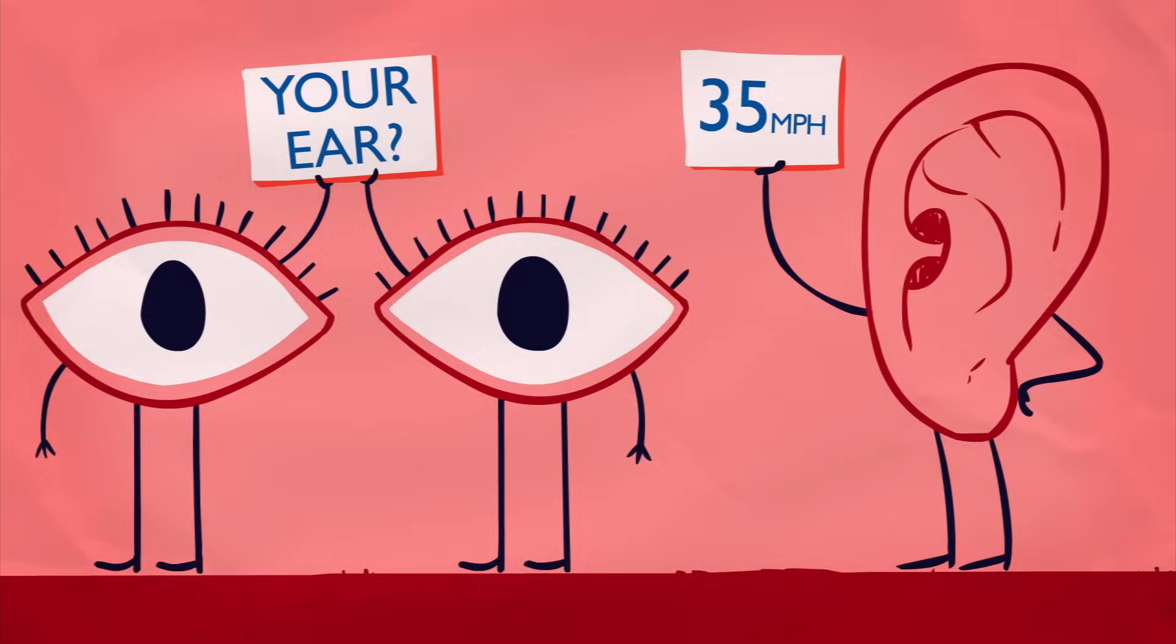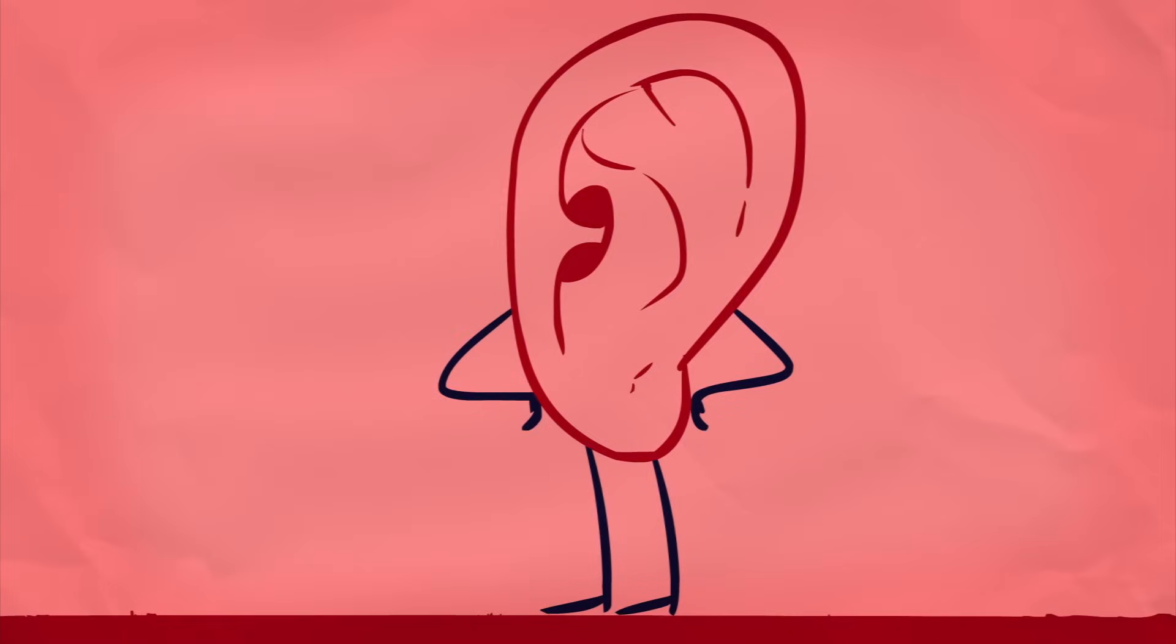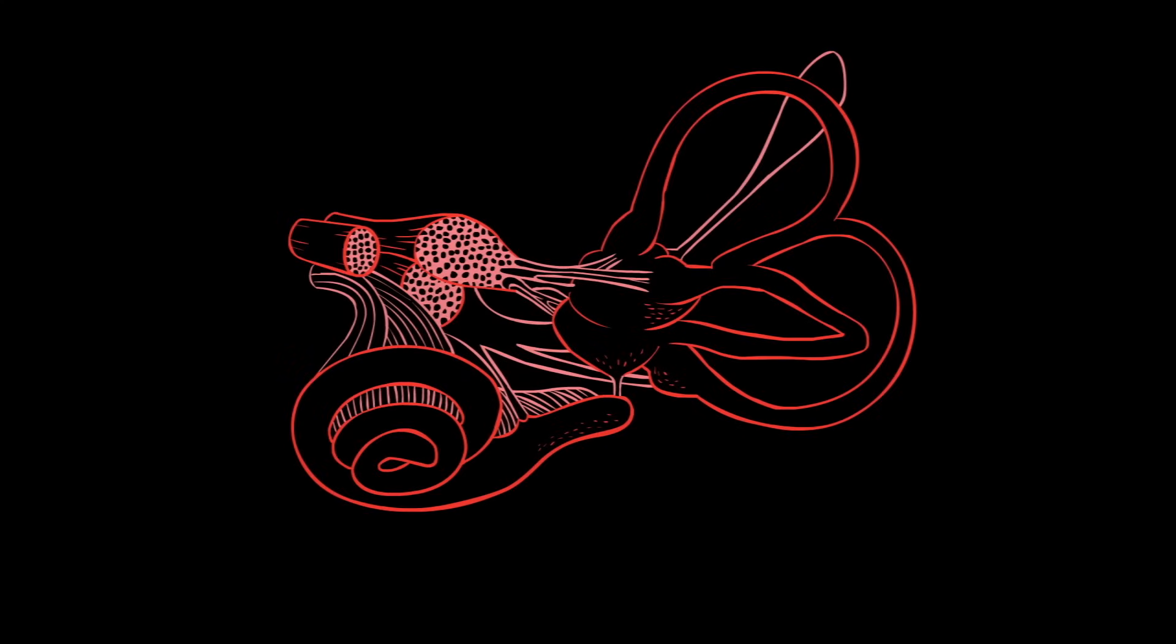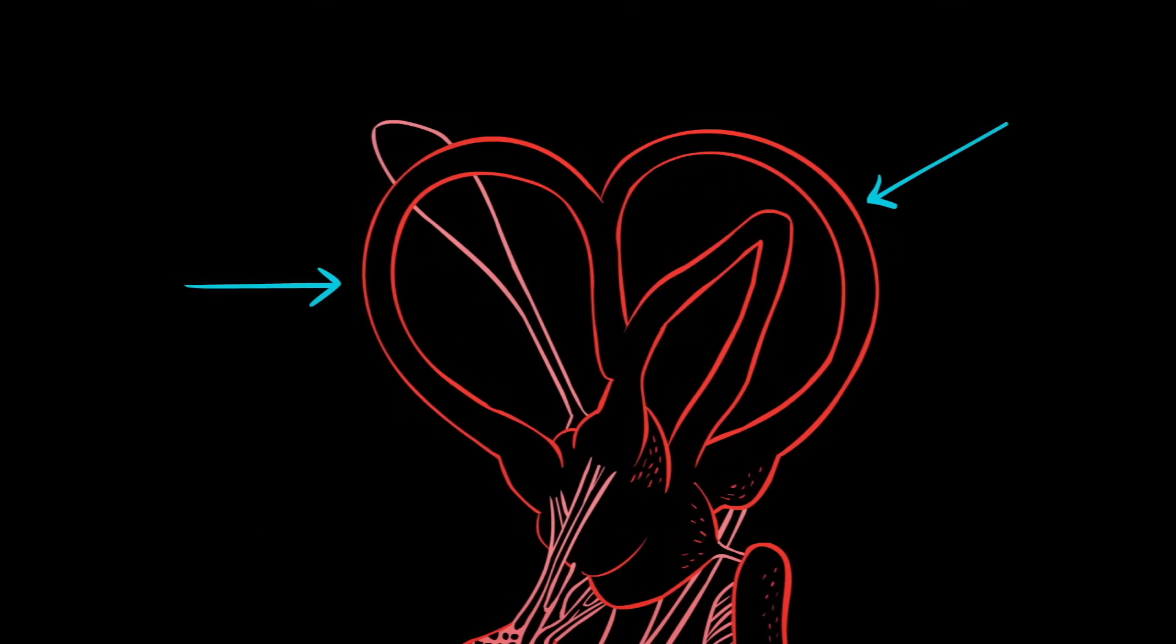Wait, your ear? Yeah, your ear actually has another important function besides hearing. In its innermost part lies a group of structures known as the vestibular system, which gives us our sense of balance and movement. Inside, there are three semicircular tubules that can sense rotation, one for each dimension of space.